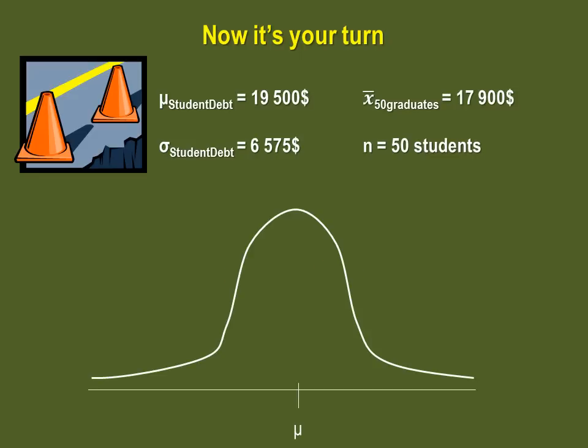Here, take a few seconds to sketch what you are looking for for the critical region, and then find the critical value. Because this is a left tail test, this is where your critical region should be, and your critical value is minus 1.645.